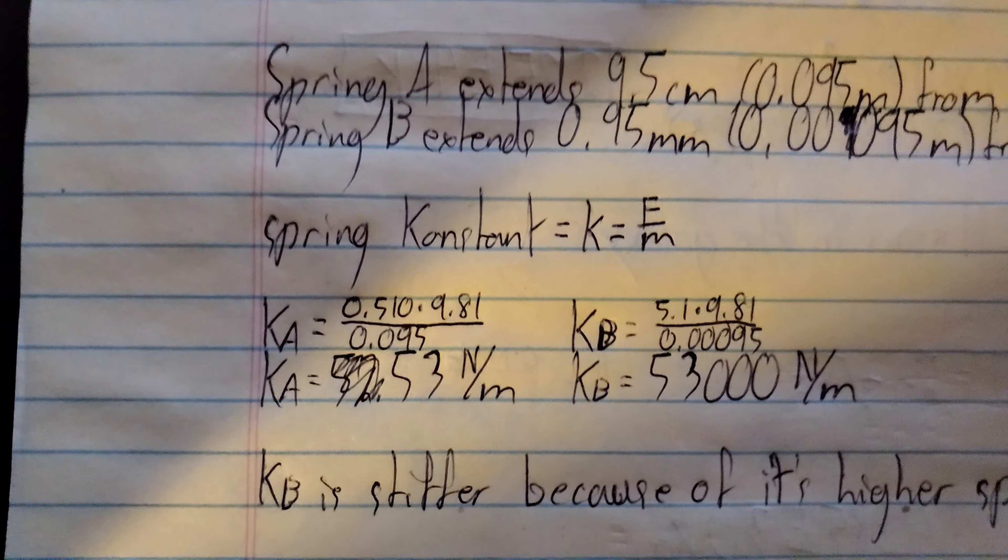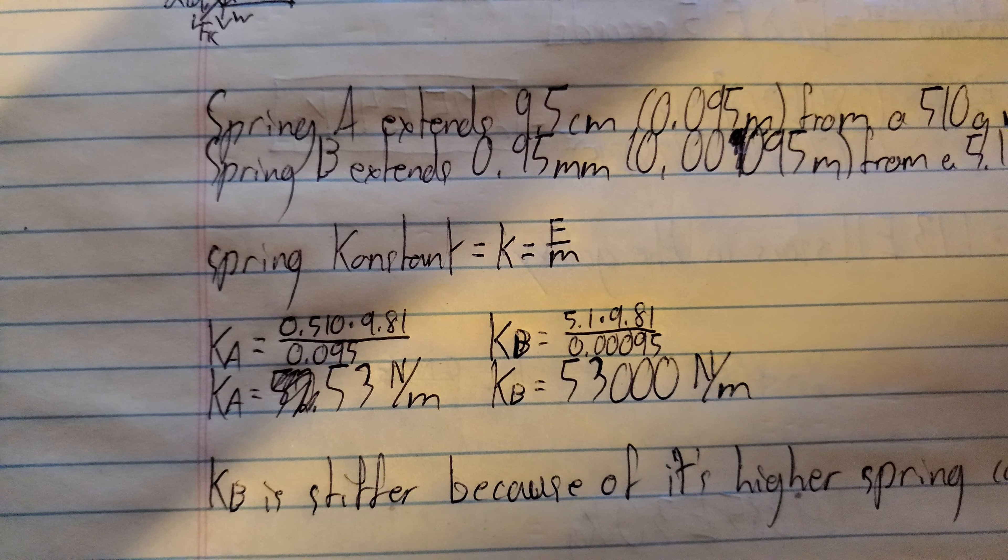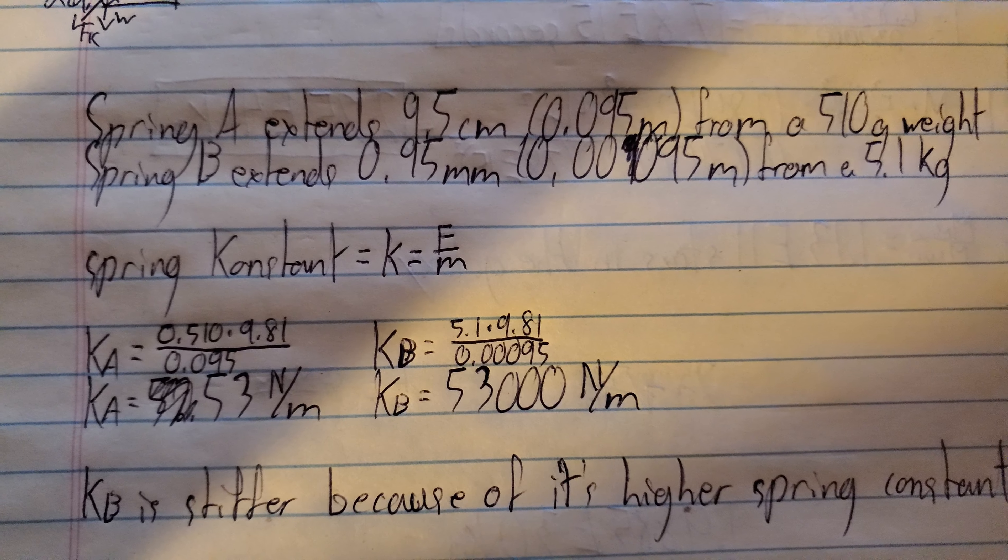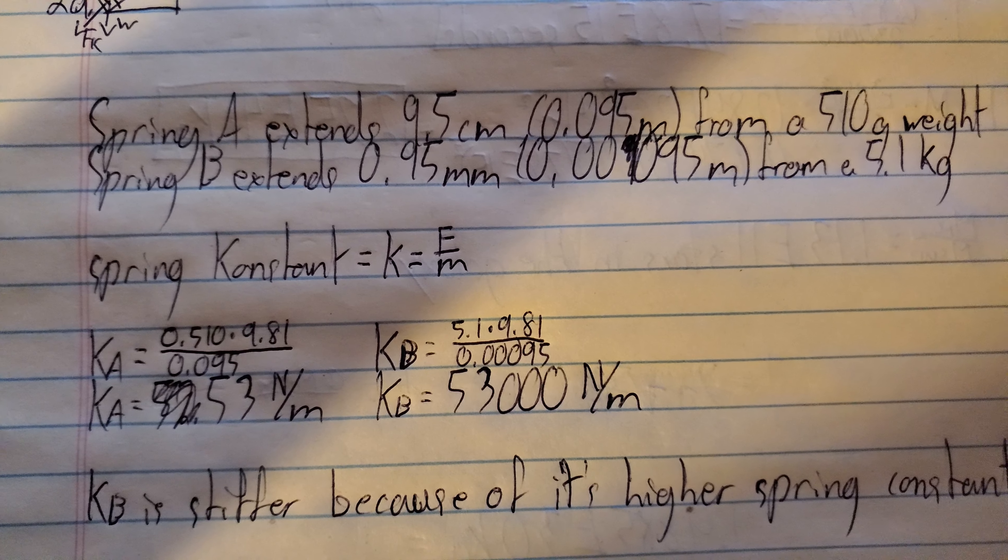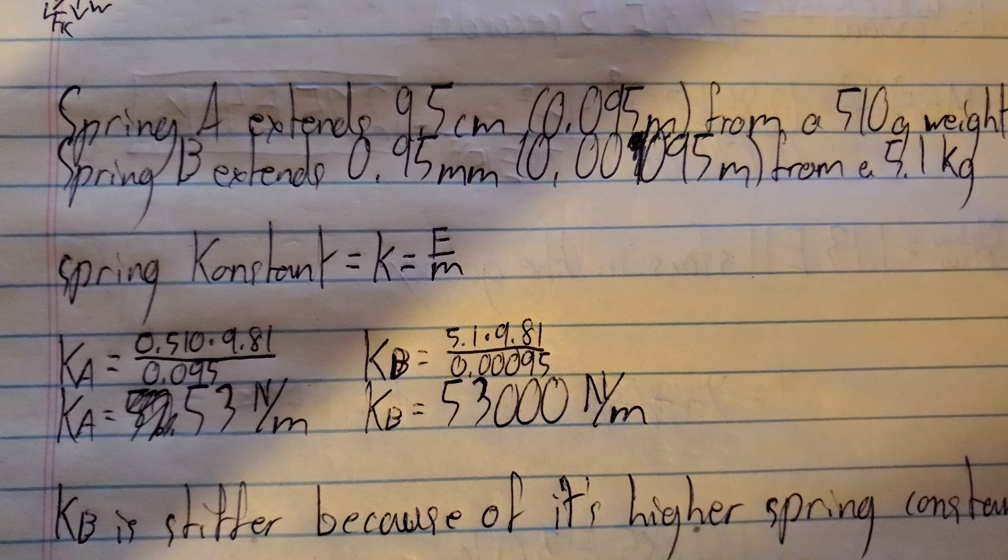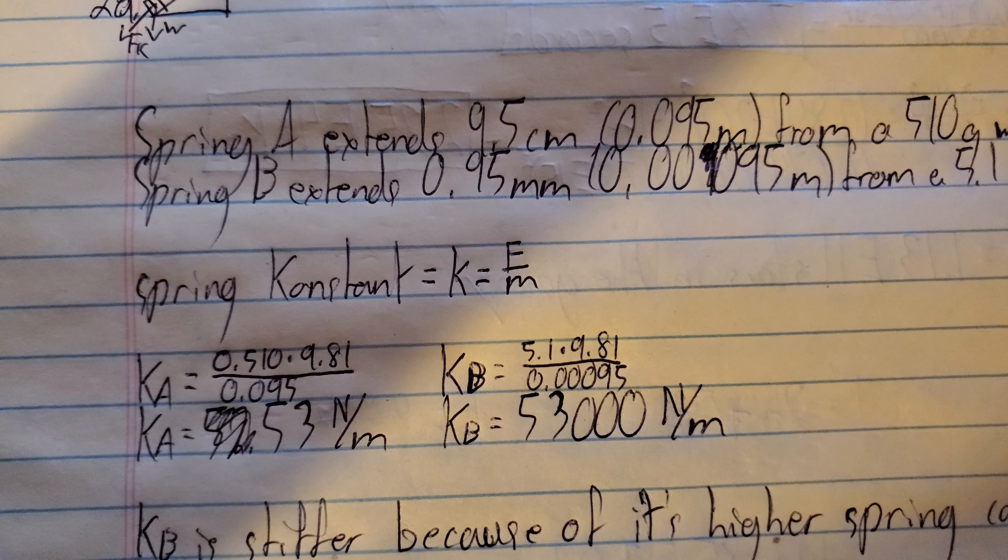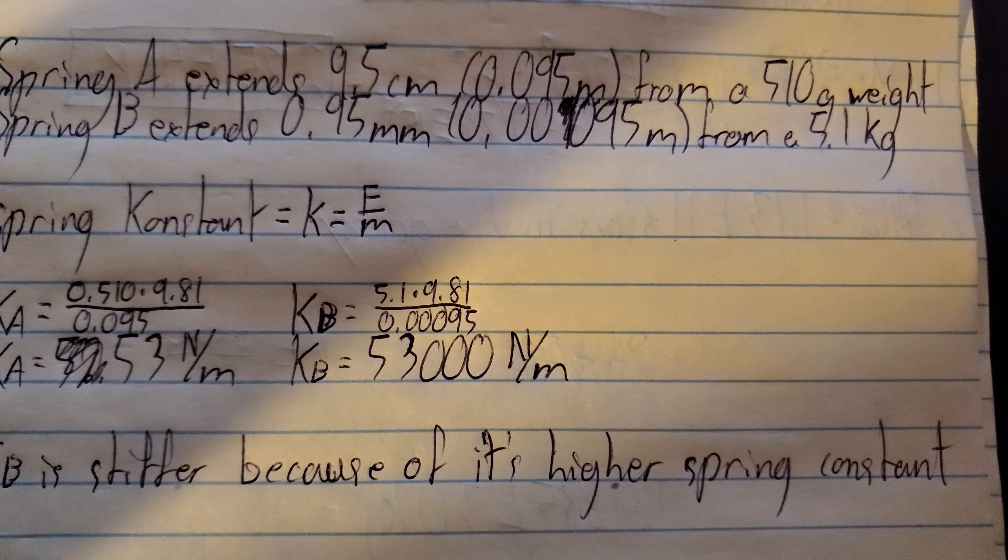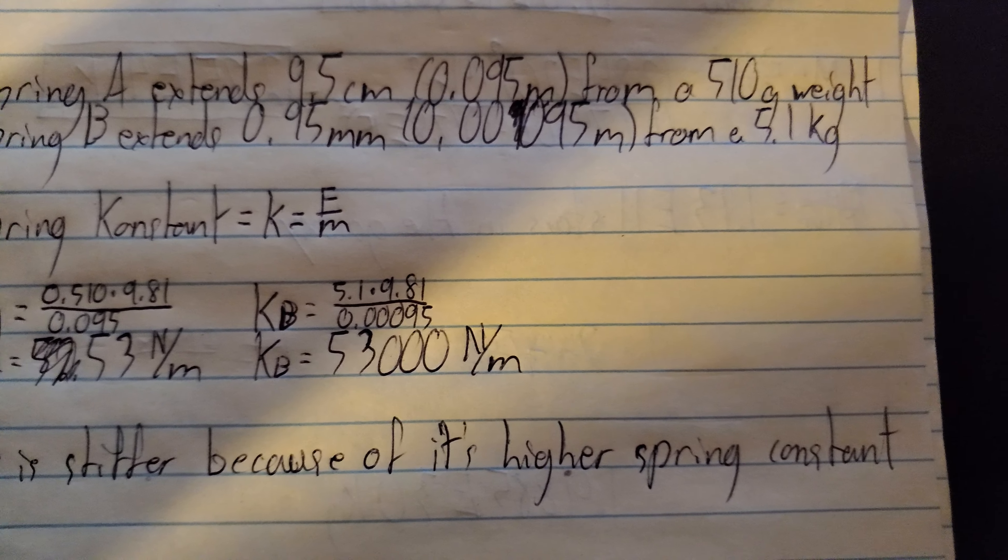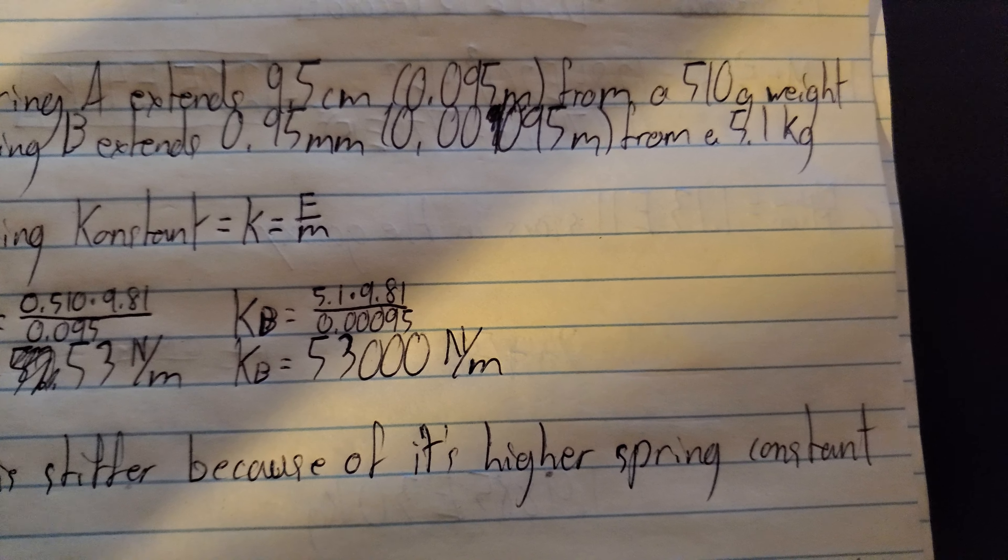Anyway, spring B extends 0.95 millimeters or 0.00095 meters. So it's a very, very short distance from a 5.1 kilogram weight. I left off the word weight because I ran out of room on the side there.